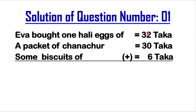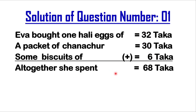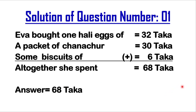Write these numbers from the right-hand side, keeping all columns aligned. In the final line, write 'all together she spent.' In the right column: 2 plus 0 is 2, and 2 plus 6 is 8, so write 8. In the left column: 3 plus 3 is 6, so write 6. Therefore, the answer is 68 taka — all together she spent 68 taka.